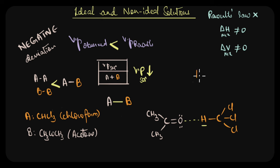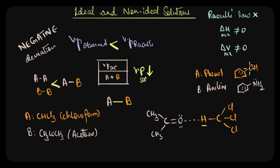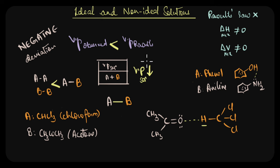Another example of a binary solution giving negative deviation is phenol (C₆H₅OH) and aniline (C₆H₅NH₂). Here, intermolecular hydrogen bonding occurs between the nitrogen of aniline and the hydrogen of the phenolic OH group. This N···H–O interaction is much stronger than their individual AA or BB interactions, so the vapor pressure of the solution decreases and it exhibits negative deviation. From this we can get a qualitative sense of what types of molecules give which type of deviation in non-ideal solutions.